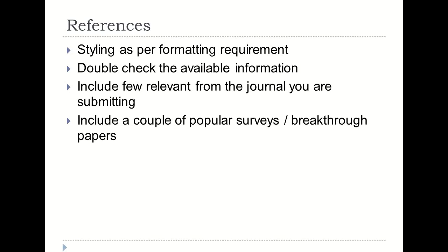Finally, we have the references. The styling or formatting is generally provided by where you are submitting your work. Double check the information you are getting about research papers, because if you are searching on Google Scholar, not every paper has all the detailed information — some may be missing volume number, issue number, or page numbers, so you need to do a little extra research to identify and include that information. A general suggestion is to include a few relevant papers from the journal you are submitting to, a couple of popular or breakthrough papers in that area, and the rest of the papers from what you have covered in the literature review.